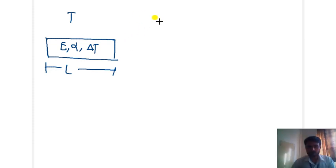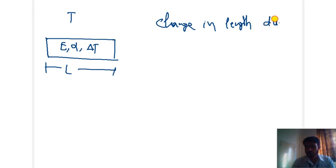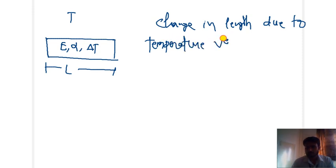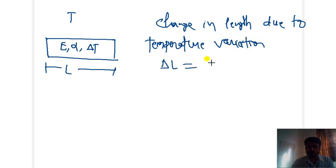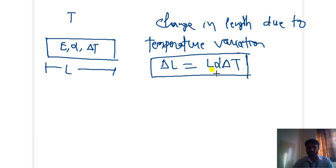The amount of deformation can be calculated. The change in length due to the temperature variation, delta L, will be equal to L × alpha × delta T. Using that formula we can calculate the change in dimension or change in length due to the temperature variation.